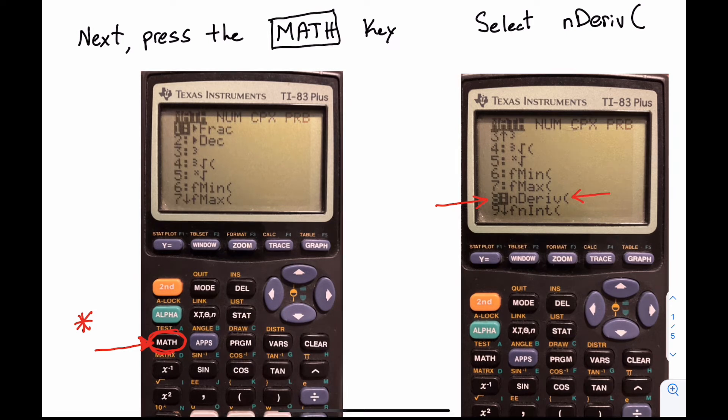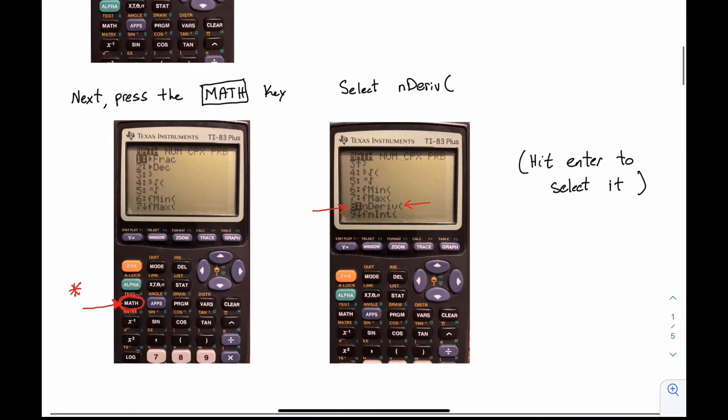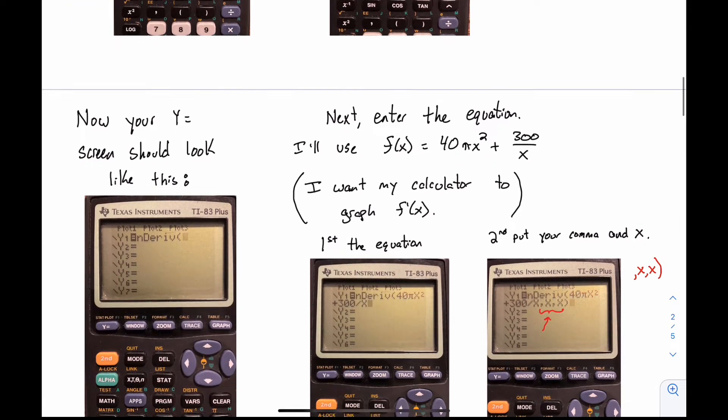And then you're in the math menu, and you want to scroll down, you want to use the arrow keys and scroll down to n-derive. It's the eighth one. And to select that, you just hit enter. Hit enter to select n-derive, and what will pop up then in Y equals is this.